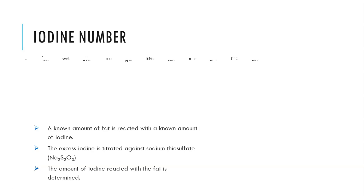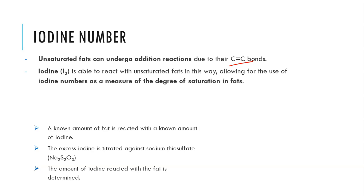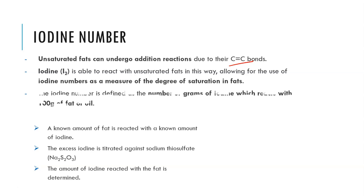The way we do this is from what we refer to as the iodine number. This essentially works on the fact that unsaturated fatty acids can undergo addition reactions because of the C=C double bond. We know that this alkene functional group can undergo addition reactions with halogens, and we use that in order to be able to work out the number of double bonds that were present.